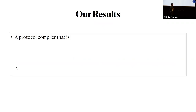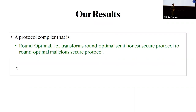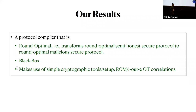Given the state of the art, let me present our results. We give a protocol compiler that is round optimal — if you give a round optimal semi-honest secure protocol, it compiles it into a round optimal malicious secure protocol. It is black box and makes use of simple cryptographic tools. That is, it either works in the random oracle model, or in the one-out-of-two random OT correlation setup, where we have efficient tools for generating such OT correlations using the machinery of PCGs.